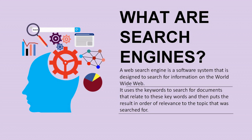It then puts the results in order of relevance to the topic that was searched for. For example, when you search something in Google, after writing your question it picks up the keywords from your question, starts searching for related documents, and shows the results in order of relevance.